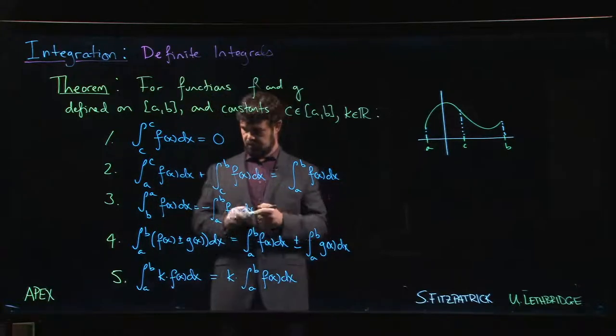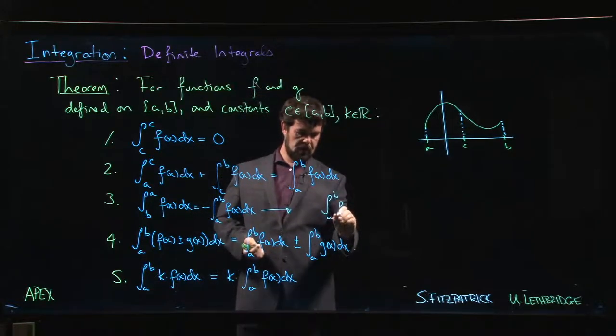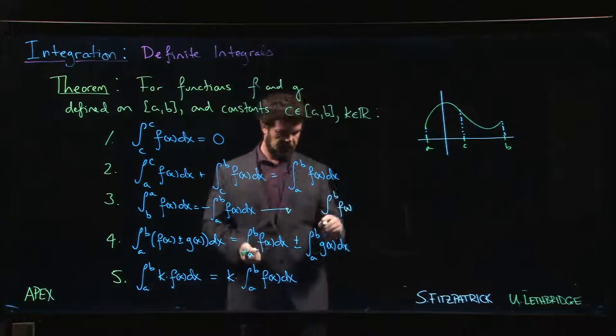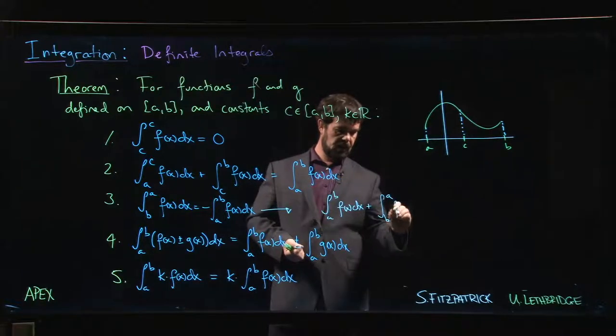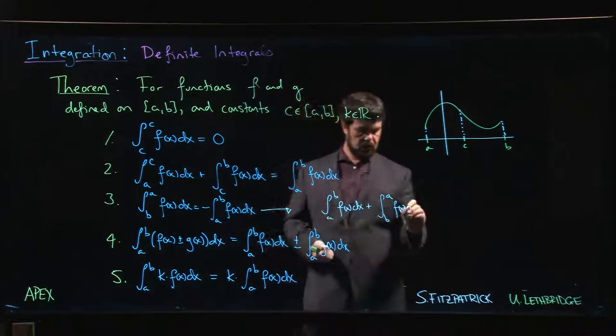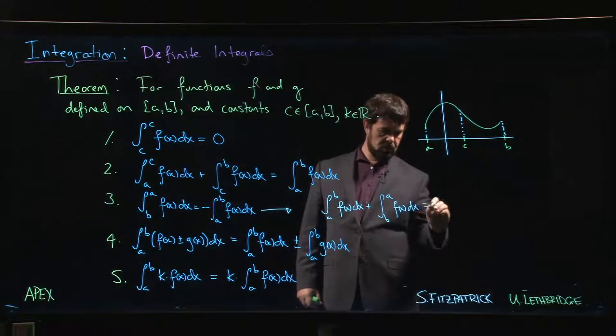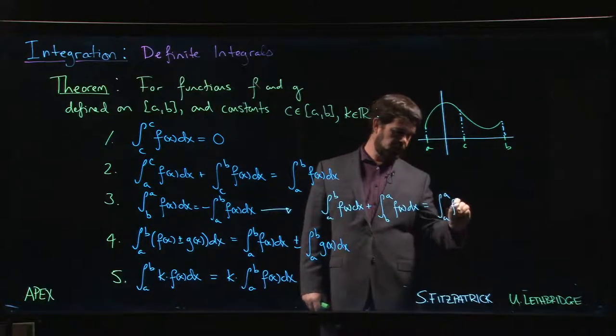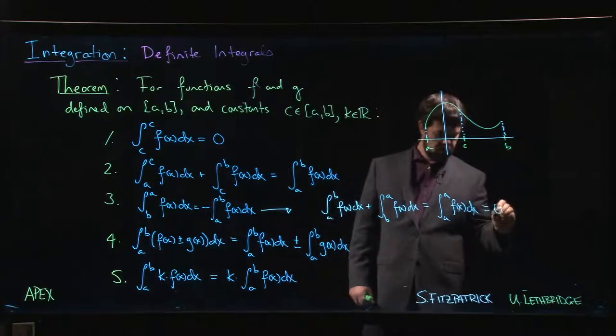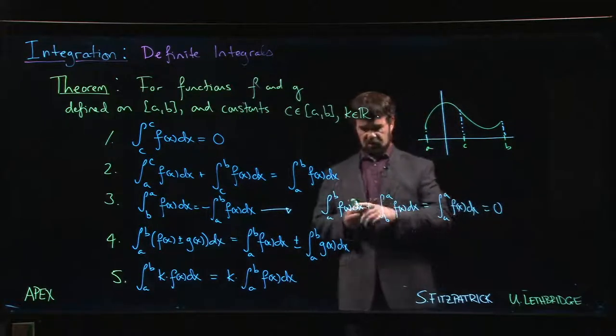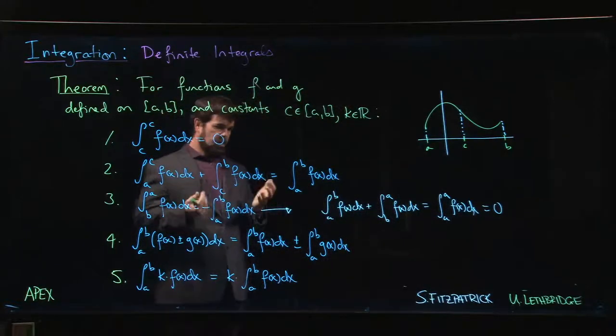Oh yeah, I know how we can do it. If we move it to the other side, this would be the same thing as saying that the integral from a to b of f(x) dx plus the integral from b to a of f(x) dx, well, using rule number two, that works out to be the same as the integral from a to a of f(x) dx. And then using rule number one, we know that's zero.